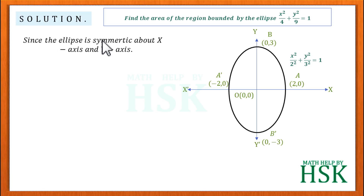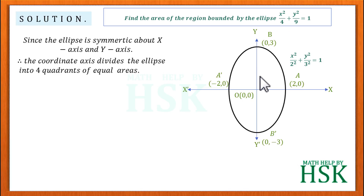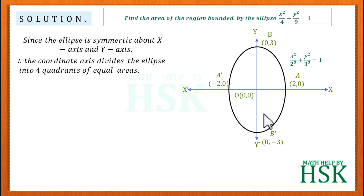Since the ellipse is symmetric about both the x-axis and y-axis, the coordinate axes divide the ellipse into four quadrants of equal area. All four quadrants are equal in area.